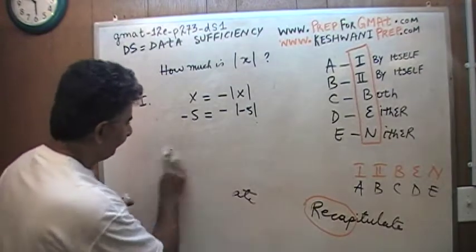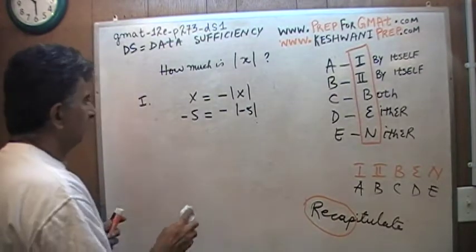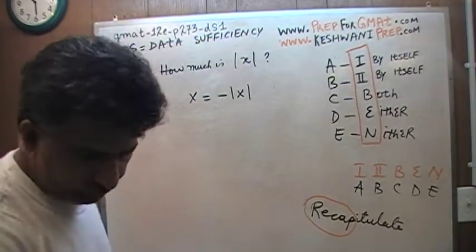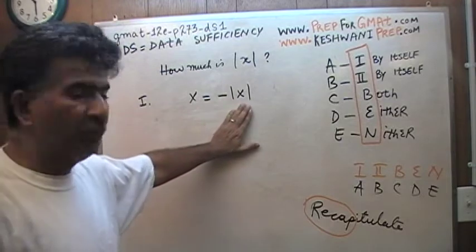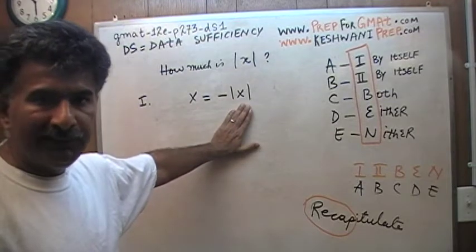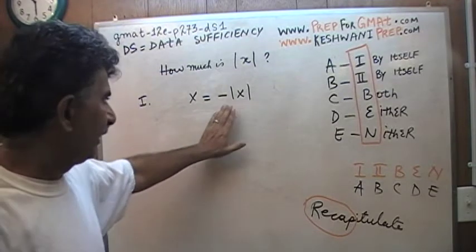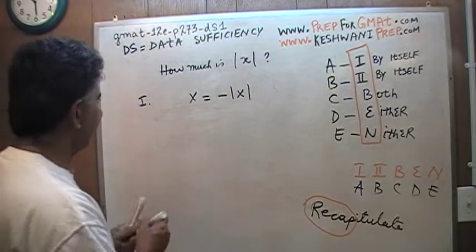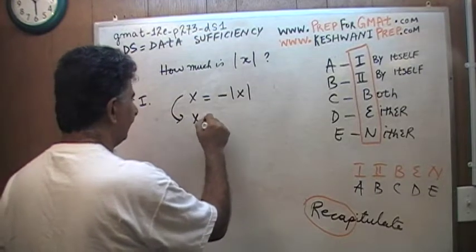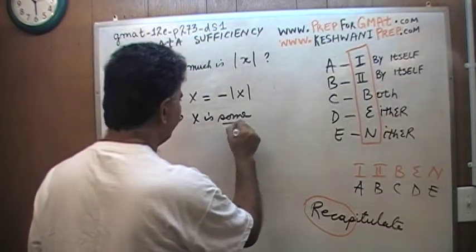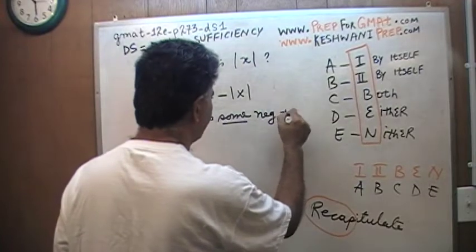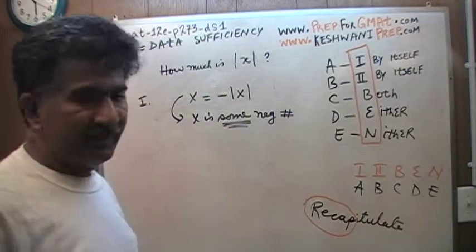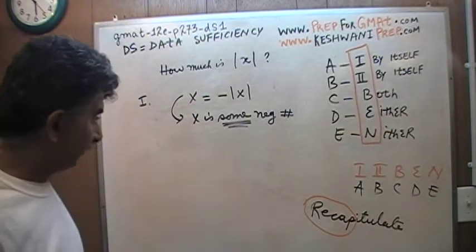Let me quickly recapitulate. What we're being told is that x equals negative of absolute value of x. Absolute value of any number is positive, and since we have a negative in front, that tells me x is a negative number. This statement tells us x is some negative number, but which negative number, I do not know. This statement is not enough by itself.